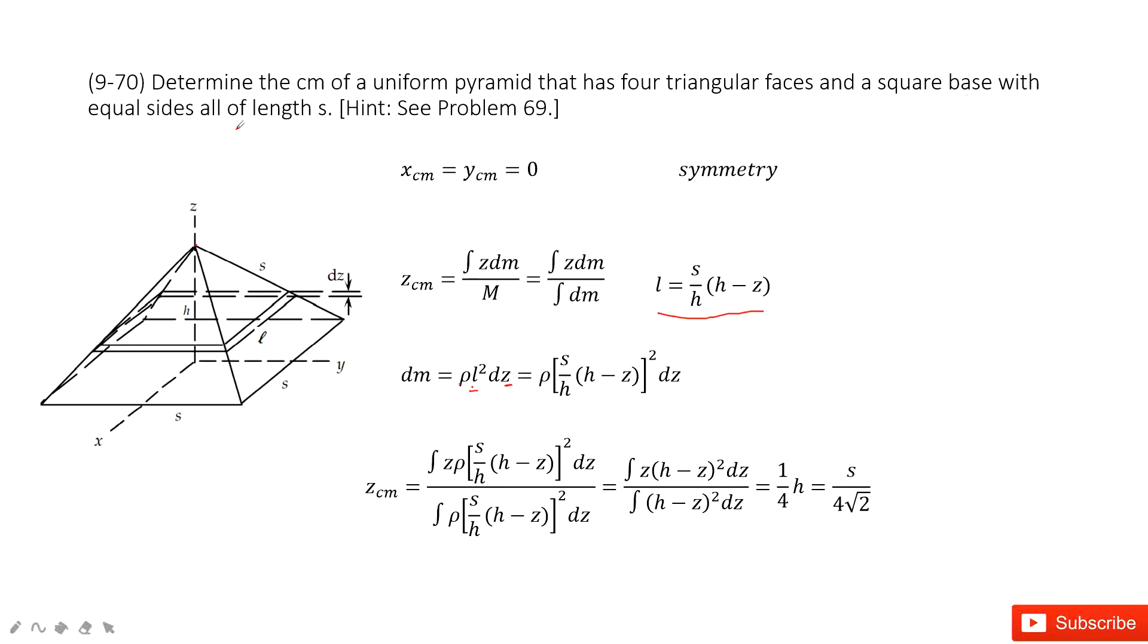Problem 70 asks you to find the center of mass in variable with length s. So can you find the relationship between h and s? Sure, because we can see this is h, this is s, and this is 45 degrees. So of course, h equals s divided by square root 2.